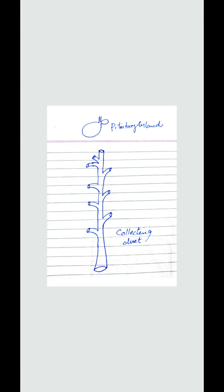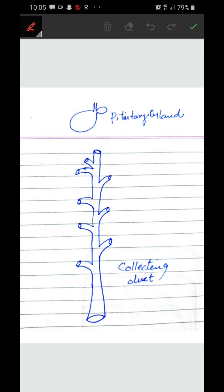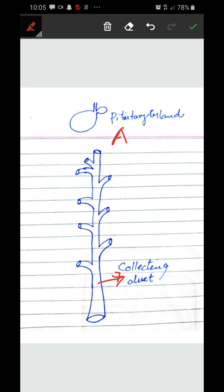And that part I have mentioned here. This is called the collecting duct. And in this collecting duct, that part goes under another gland which is present in your brain. And this is called pituitary gland. Pituitary gland produces a special hormone which is known as ADH.